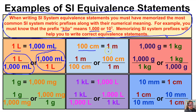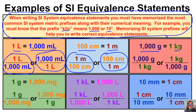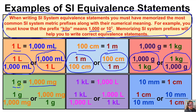There are one hundred centimeters in one meter — the prefix centi means one one-hundredth, so there are one hundred centimeters in one meter. We can express this equivalence statement as a fraction. The prefix kilo means a thousand, so there are one thousand grams in one kilogram, expressed as one thousand grams over one kilogram or one kilogram over one thousand grams. One gram equals one thousand milligrams, expressed as one gram over one thousand milligrams or one thousand milligrams over one gram.